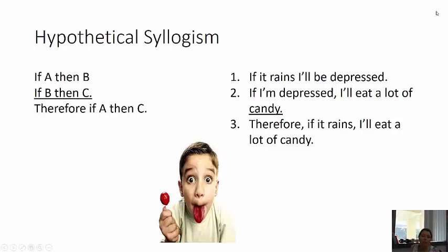Let's talk about two more famous forms: hypothetical syllogism and disjunctive syllogism. Hypothetical syllogism goes like this: if A then B, if B then C, therefore if A then C.